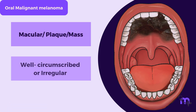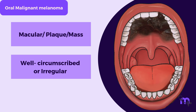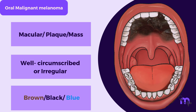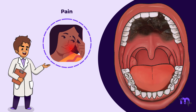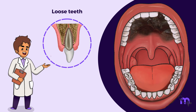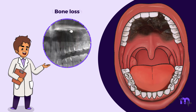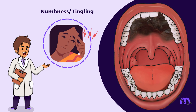They may be well circumscribed or irregular. Their colour varies between shades of brown, black, or blue pigmentation. Other signs can include ulcerations, pain, loose teeth, bone loss, numbness, or tingling.